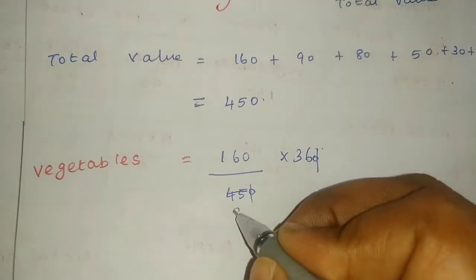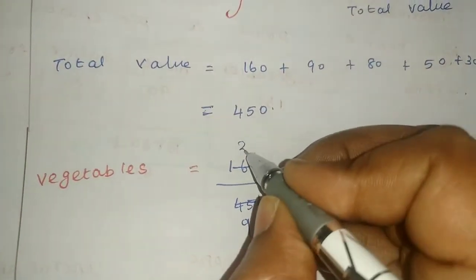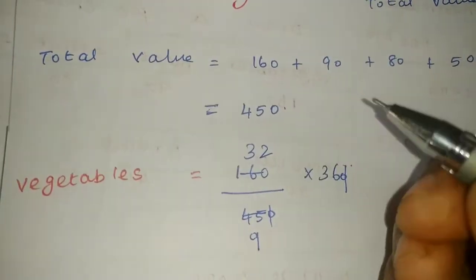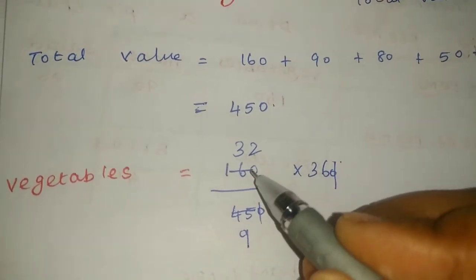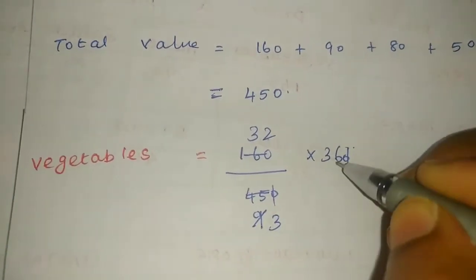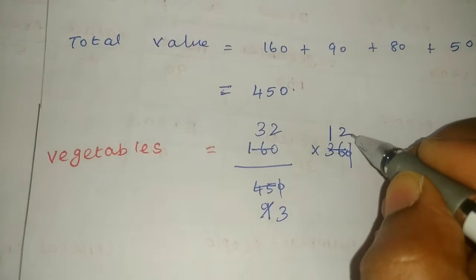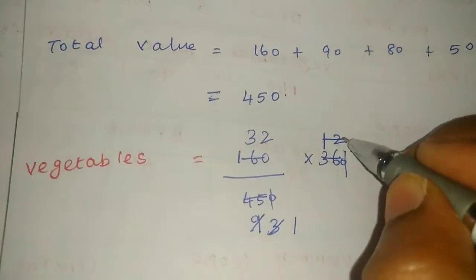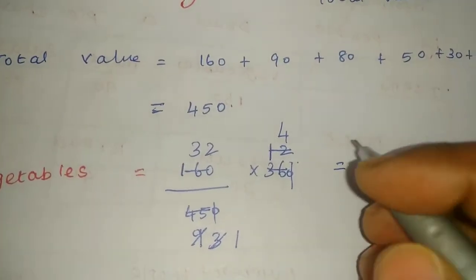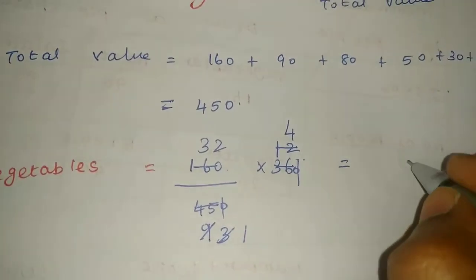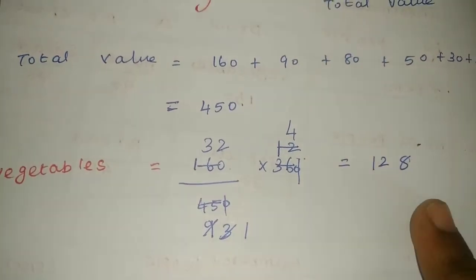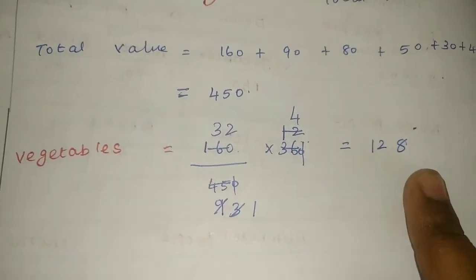After calculating: the result is 128 degrees. So the central angle for Vegetable is 128 degrees.